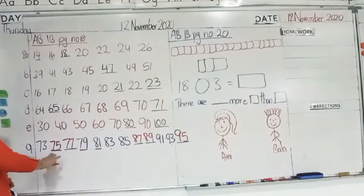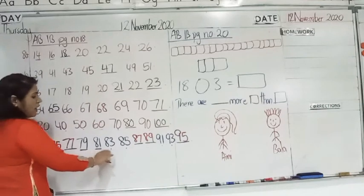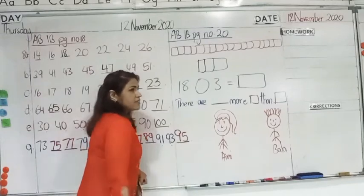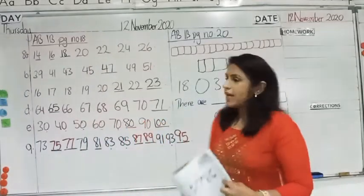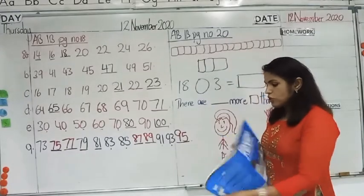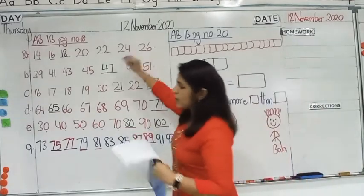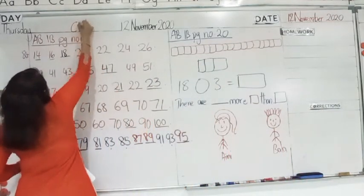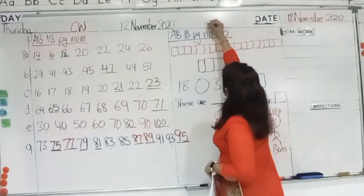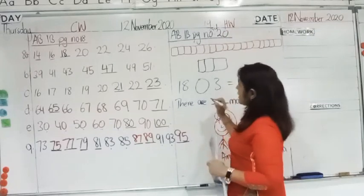So, this is 73, skip to numbers: 75, 77, 79, 81, 83, 85, 87, 89, 91, 93, 95. Okay. Now, over here, you can see we are on page number. This one is for classwork. This is CW. And this one, page number 19 and 20 is for homework.